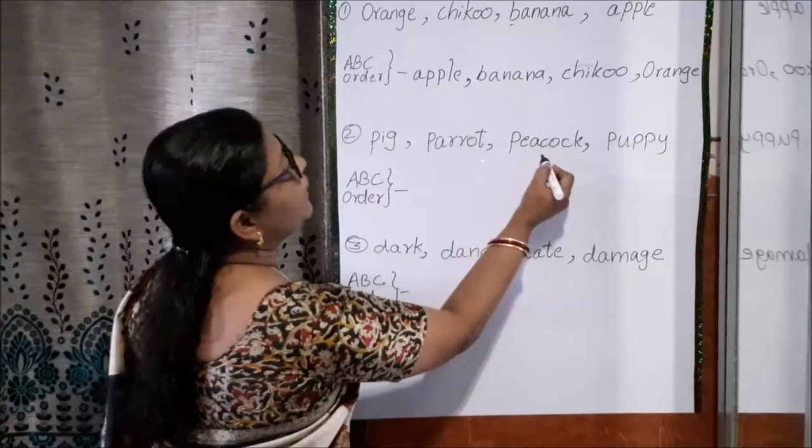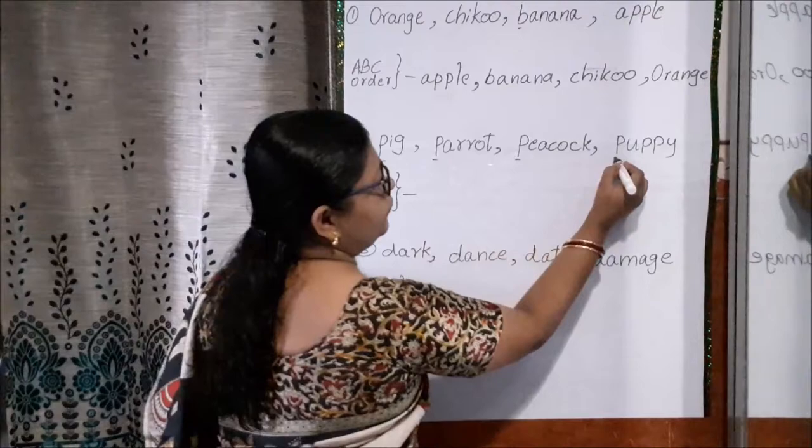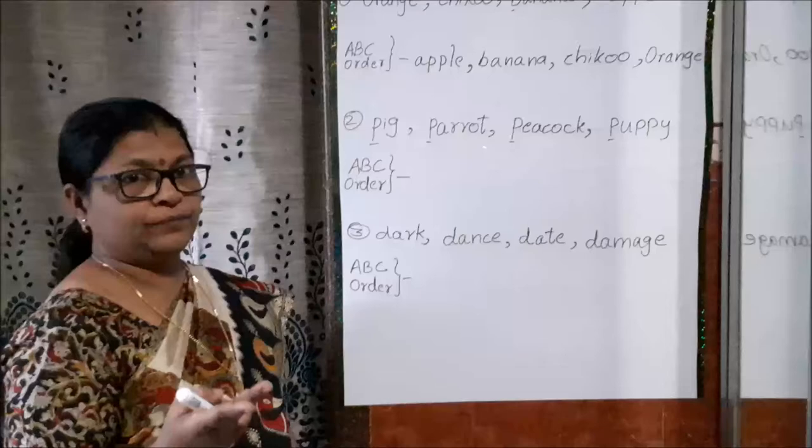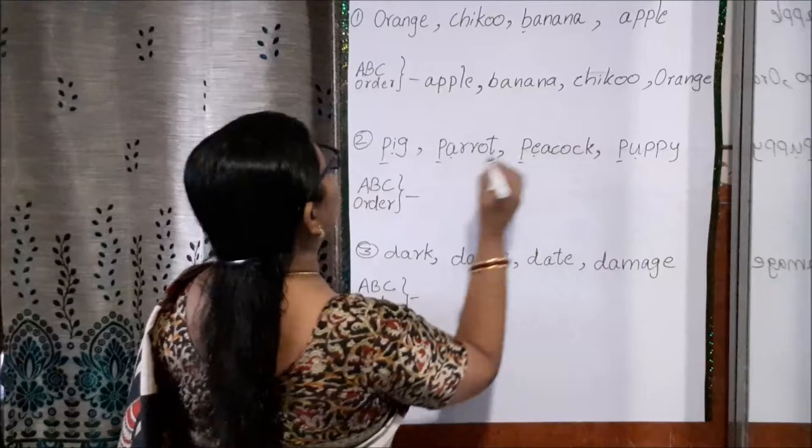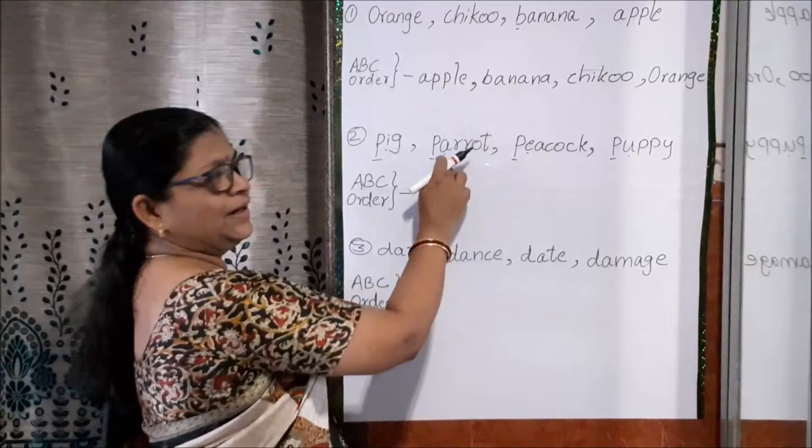So you will see that here, all these first letters, see, it's same. P is common. So what we have to do, we have to see the second letter. Second letter here is given I, your A is there, your E, then U. In this I, A, E, U, which is the first letter, which one will come first? A will come.